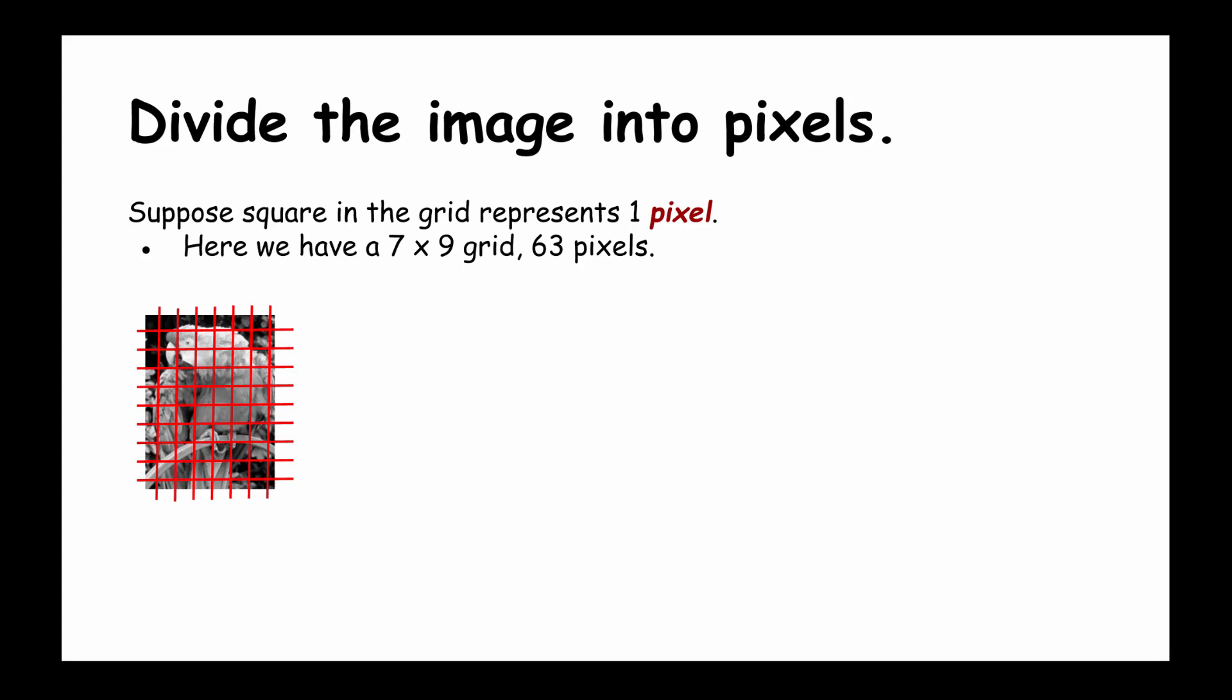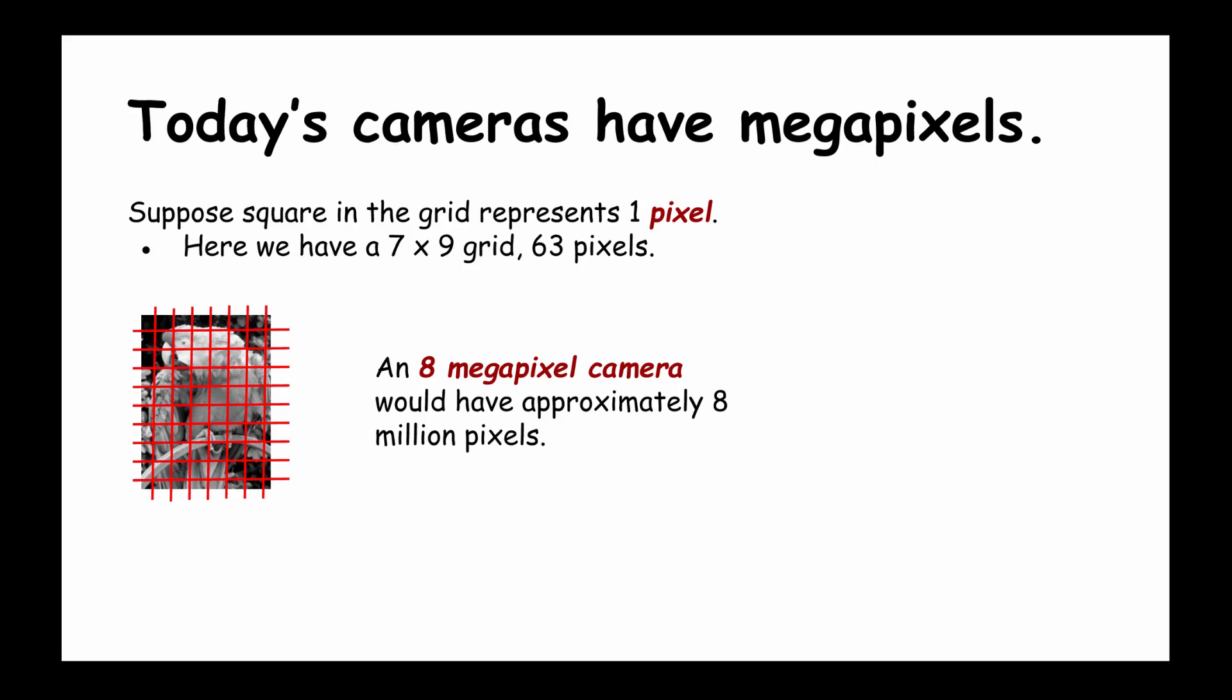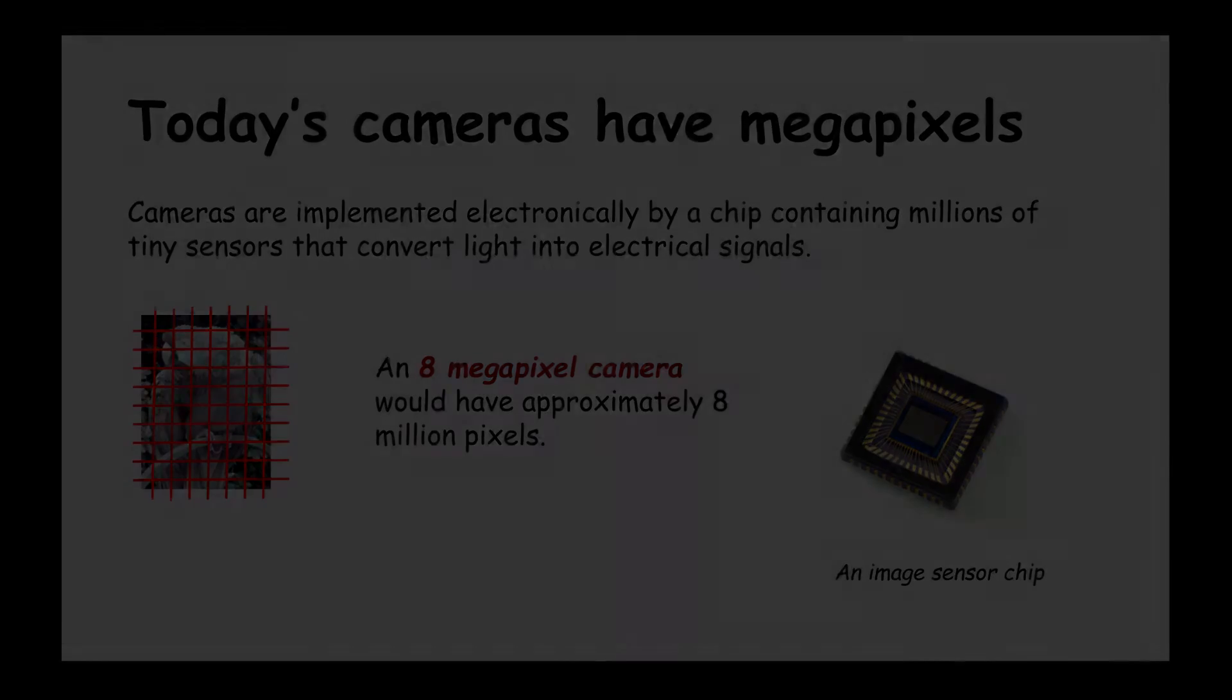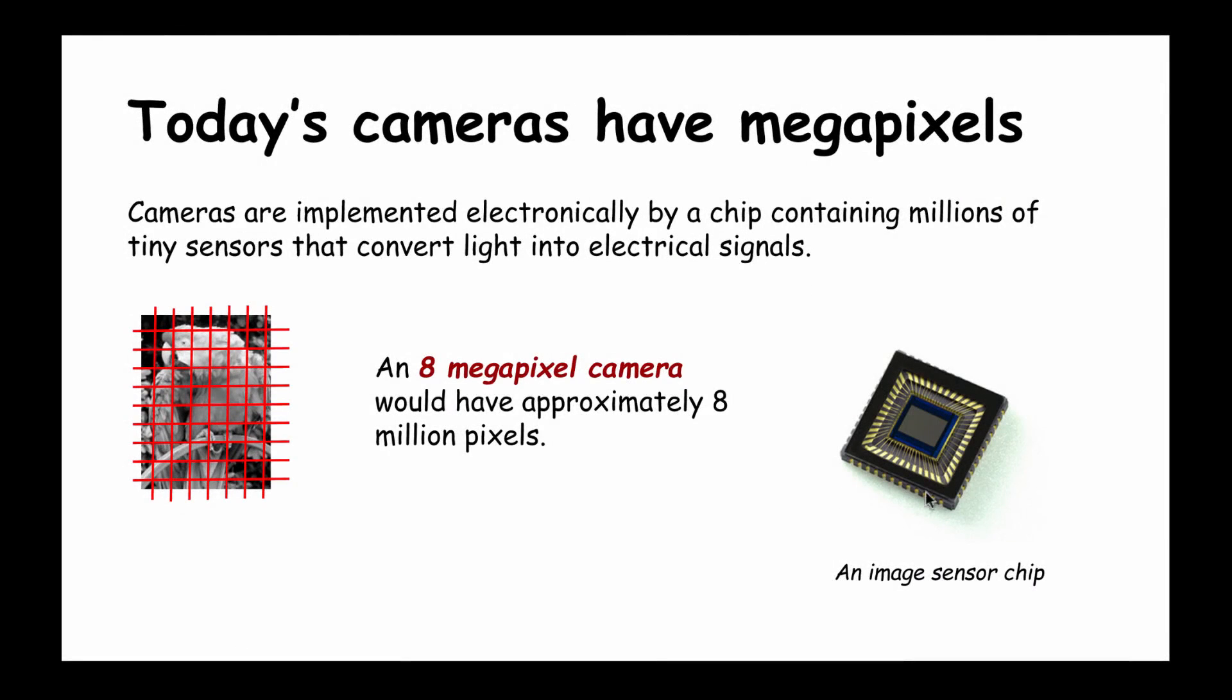An 8 megapixel camera would have approximately 8 million pixels. Here's a picture of an image sensing chip from a Samsung camera. If this happened to be an 8 megapixel camera chip, it would contain on it 8 million light sensing sensors that would be sensing the intensity of the light coming in through the camera lens and representing that light as a number.